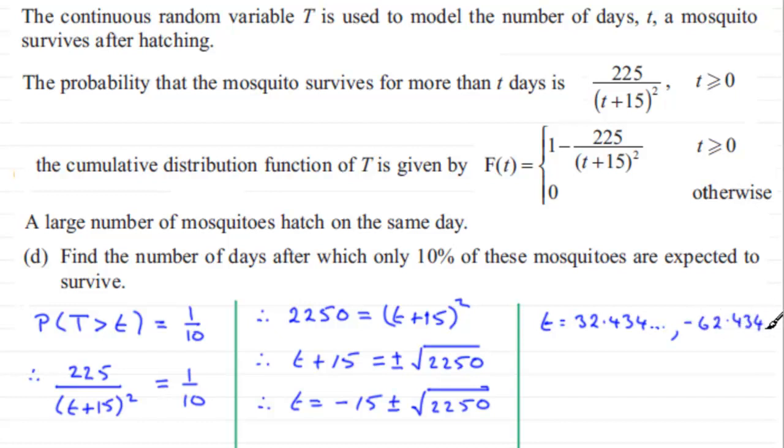Now obviously you can't have a negative number of days for a problem like this. So I'm just going to say that since t has to be greater than or equal to zero, as we're told here, therefore t has got to equal the positive one here. And if we give this to say three significant figures, it's going to be 32.4 days. Okay, to three significant figures, 3sf for short.